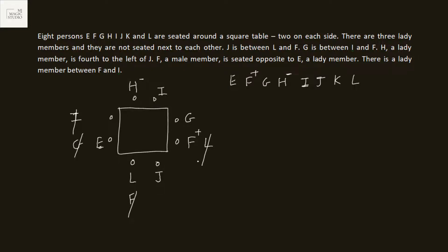After eliminating the conflicting arrangement, we're left with E, F, G, H, I, J, K placed around the table, and K sits in the remaining seat. F is a male seated opposite E, who is a lady member. L and I should be male. There is a lady member between F and I — that is G, the lady member — so three ladies are done and the remaining seat is male. Final answer: E is female, G is female, H is female. I, J, K, L, and F are male. That is the complete seating arrangement.